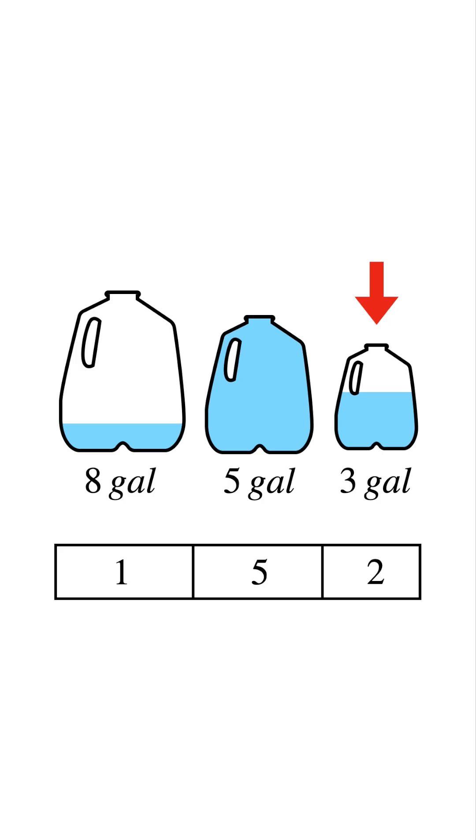Look at the 3-gallon jug. It already has 2 gallons, so it only needs 1 more. Pour 1 gallon from the 5 into the 3. Now the 3 is full. And look at the 5-gallon jug. It now holds exactly 4 gallons.